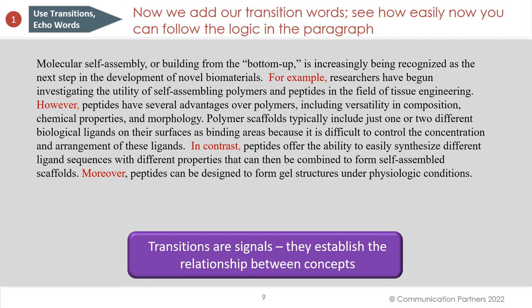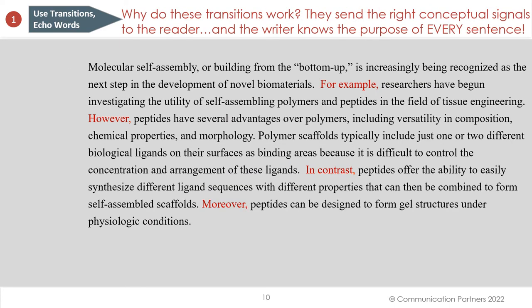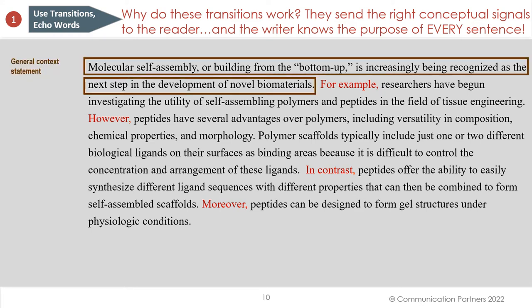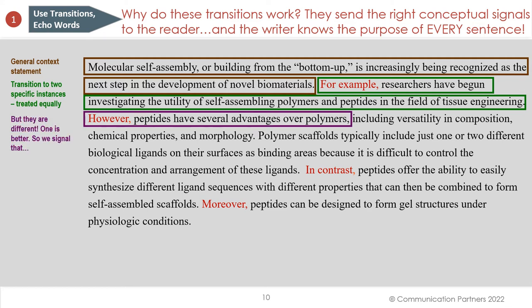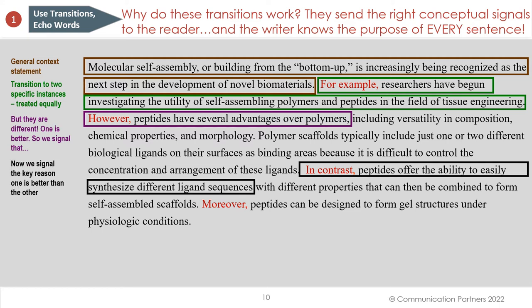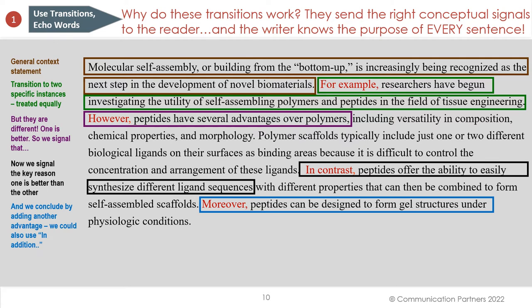The transitions are signals — they establish the relationship between concepts. The first sentence is a general context statement that sets the stage. We transition to two specific examples treated equally, but they are different, which is why we have the contrast. Peptides have several advantages over polymers, so we signal that difference. We signal the key reason why one is better than the other, and finally we add another advantage using 'moreover' — we could also use 'in addition.' Everything coheres into a coherent paragraph.